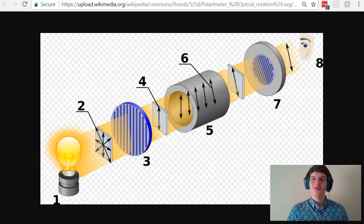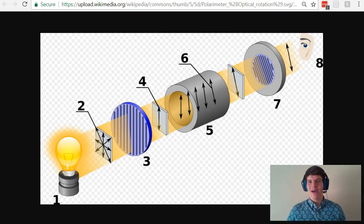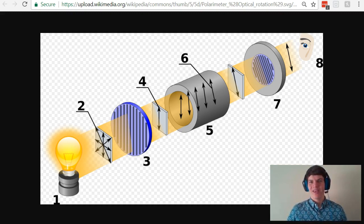In an optical rotation experiment, our goal is to figure out to what degree a substance is going to rotate plane polarized light. If you remember from organic chemistry, it is a chiral compound that is going to rotate light that is plane polarized. What we're going to do is put the chiral compound in the polarimeter tube, number five, right there. Let's discuss what's happening in the previous aspects of this experimental protocol.